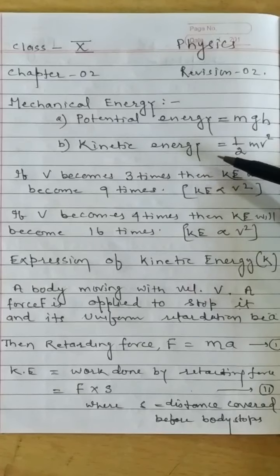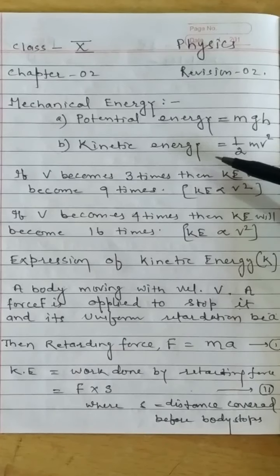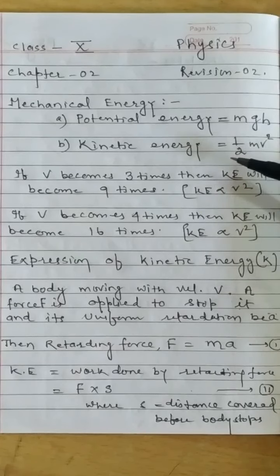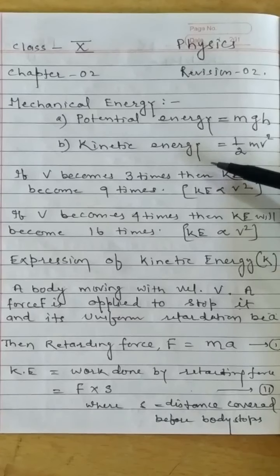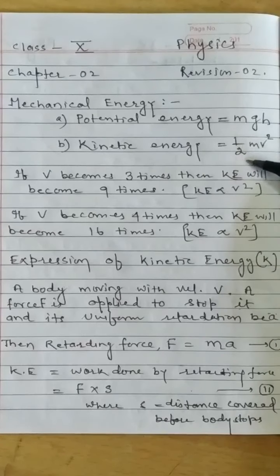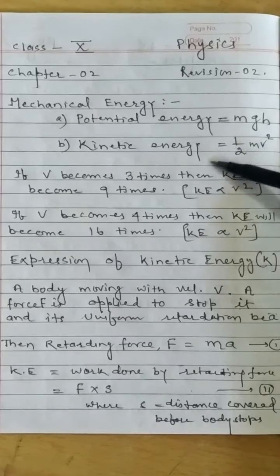Kinetic energy is due to change in speed or velocity of the body, or the state of rest or motion of the body. Kinetic energy is equal to half MV square, where M is mass and V is velocity of the body. Kinetic energy depends on two factors: mass and velocity.